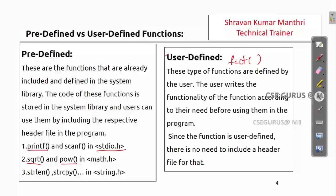The user writes the functionality of the function according to their need. Since the user writes it, there is no need to include a header file for user-defined functions. Also, one must take care that a user-defined function name must not match a predefined function name. For example, you cannot create a user-defined function named sqrt because sqrt is already defined in the compiler.